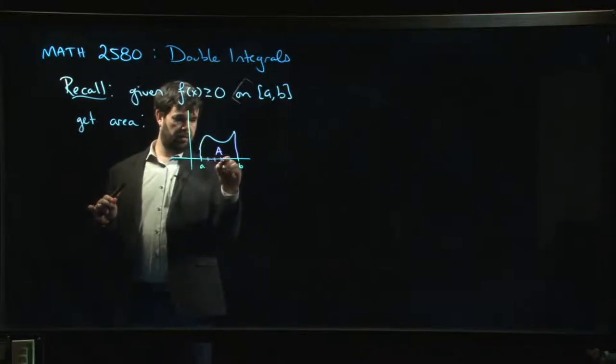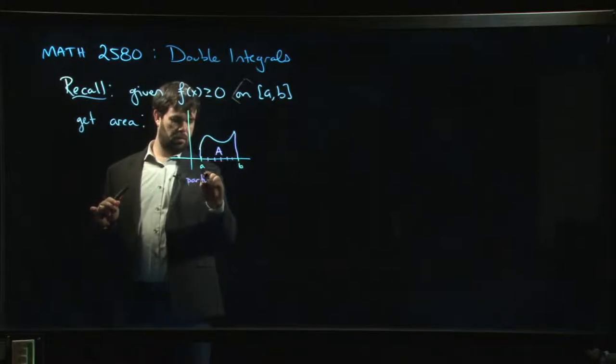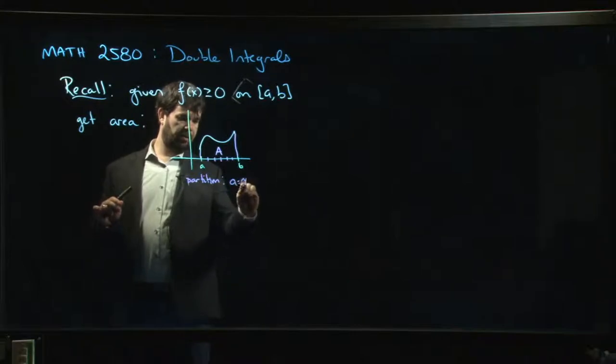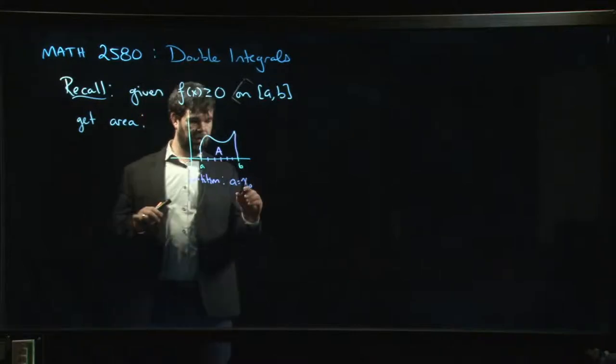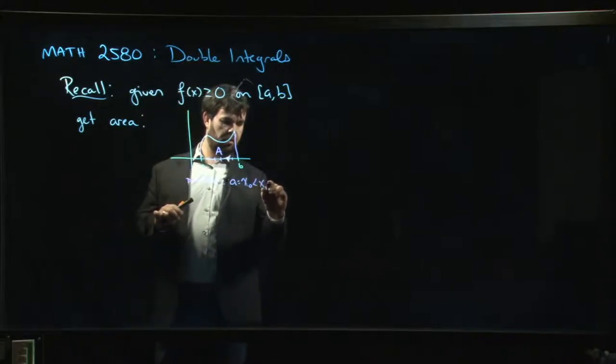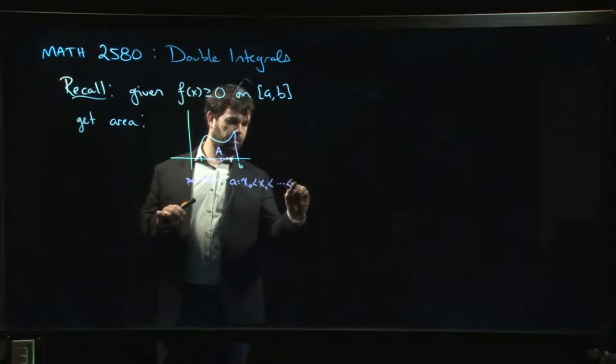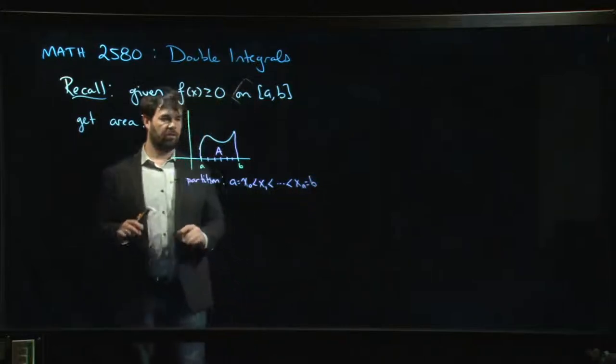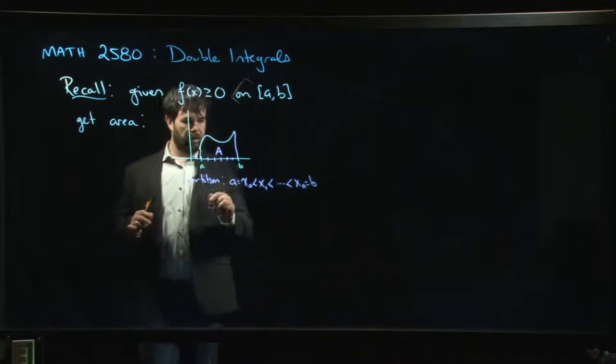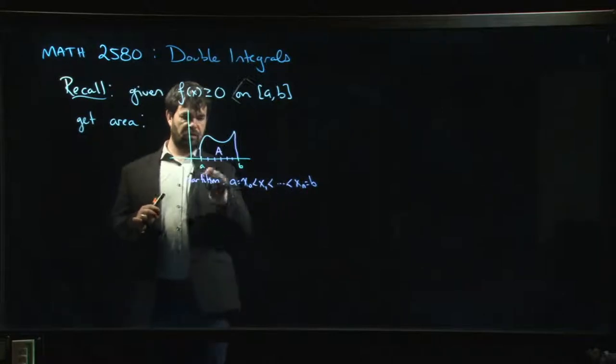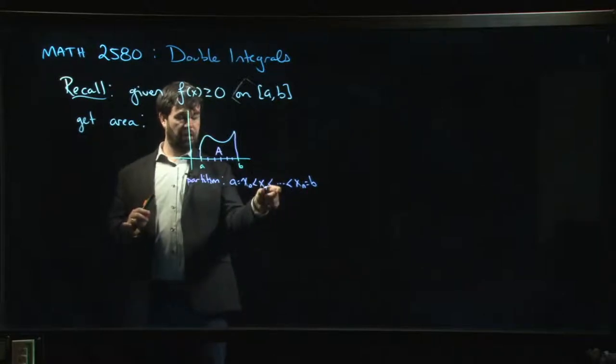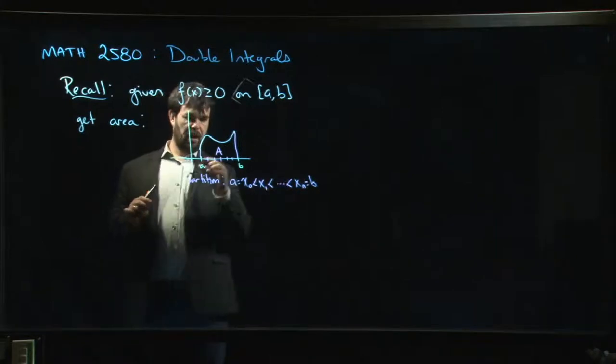And so we go through the whole process of dividing up our interval. Remember this whole idea of chopping things up, so we do this partition where we take a to be the first point, x0, and then we put in an x1, and an x2, and so on, up to some last point, xn, which is our endpoint b. And so this gives us a bunch of intervals from x0 to x1, and then from x1 to x2, x2 to x3, and so on.